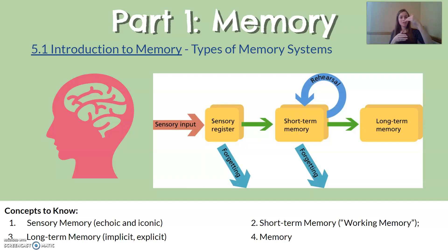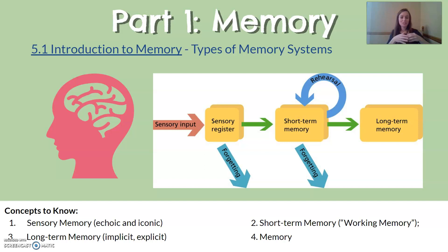Sensory memory is information that's coming in, and this capacity has a very short time frame. Some information comes in and it goes into your sensory memory and you are not keeping that information. The information coming into your sensory memory lasts just a second — it comes in and it goes out. This is any information that you're bombarded with all day long: the sounds, sights, and smells that you don't keep as long-term memories.